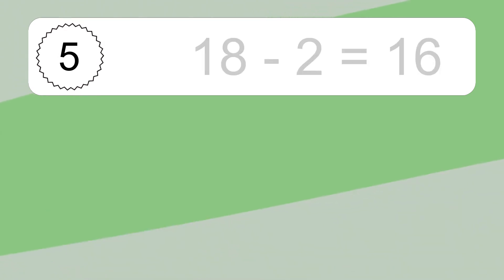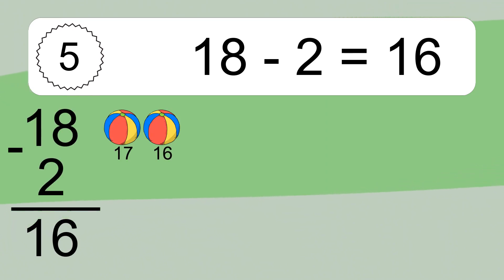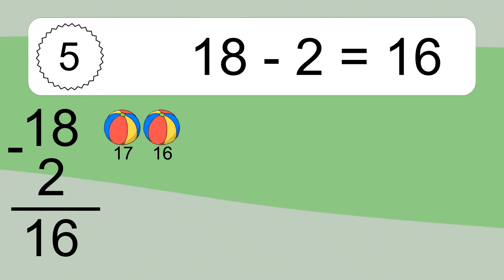18 minus 2 equals what? 18 minus 2 equals 16. Let's count it! 17, 16.